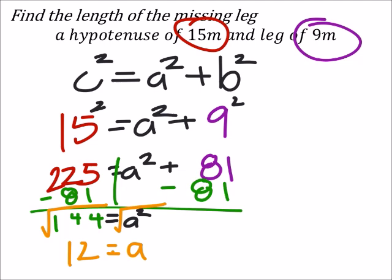So the other leg on this triangle is 12. Of course, you could go back and check, which you should do. 12² is 144 plus the 81, and that gives us 15², which is 225, and we're good.